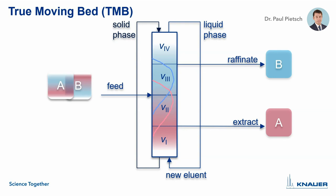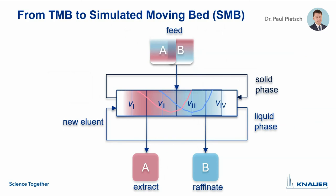In zones 2 and 3 the separation takes place, and zones 1 and 4 have the function to regenerate the solid and mobile phase. To refer to our previous example, the rabbit represents component B and the turtle component A. A counter-current stream of solid and mobile phase would lead to abrasion of the solid phase and back-mixing effects, making the technical implementation of TMB hardly possible. These circumstances led to the development of the SMB process. The first step from TMB to SMB is to split the stationary phase into single columns.